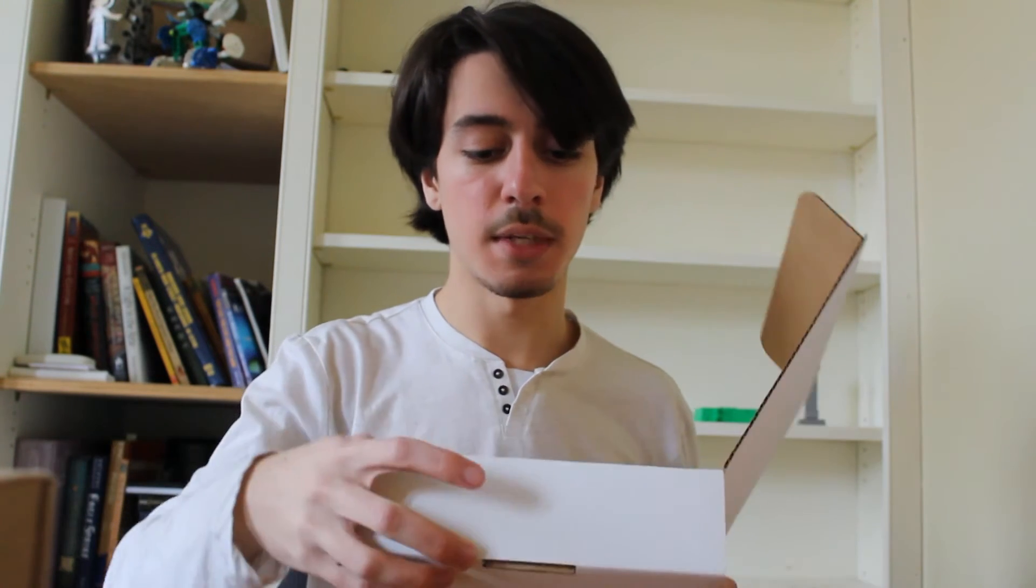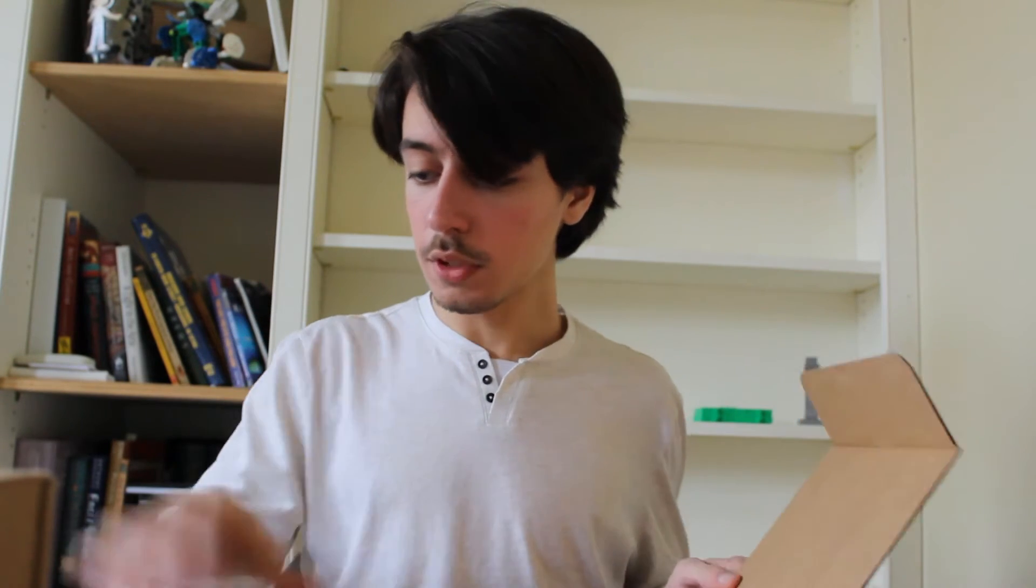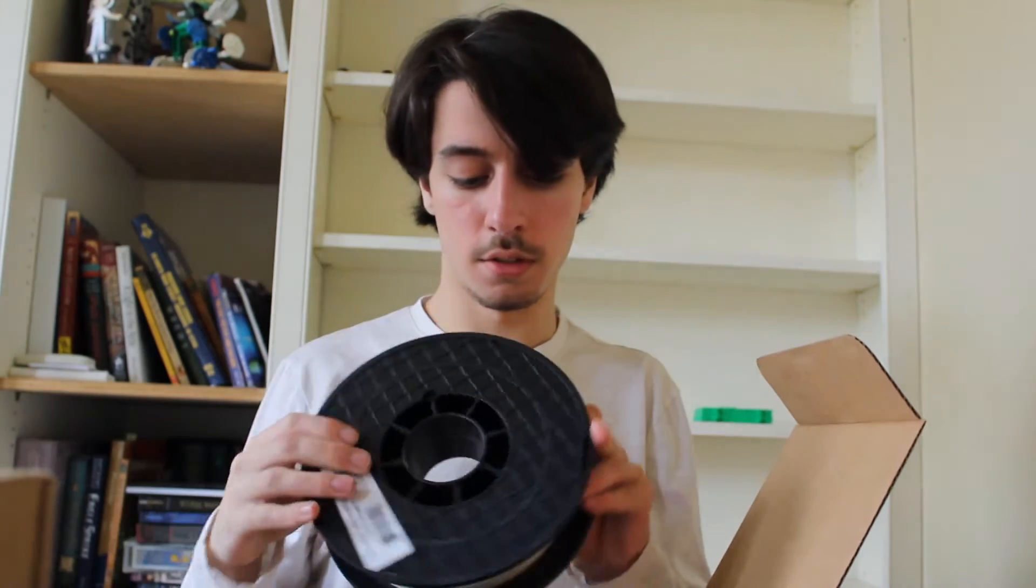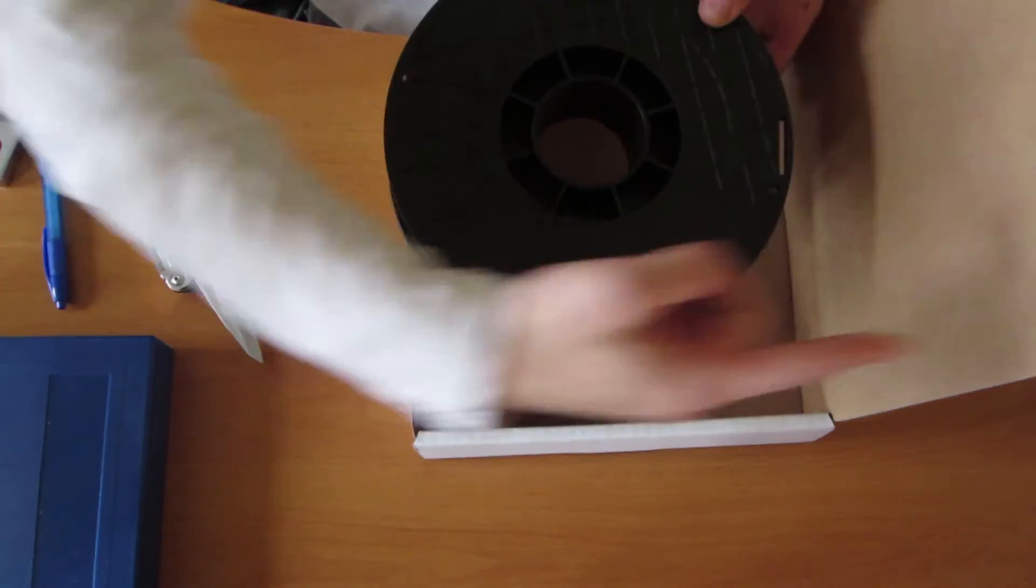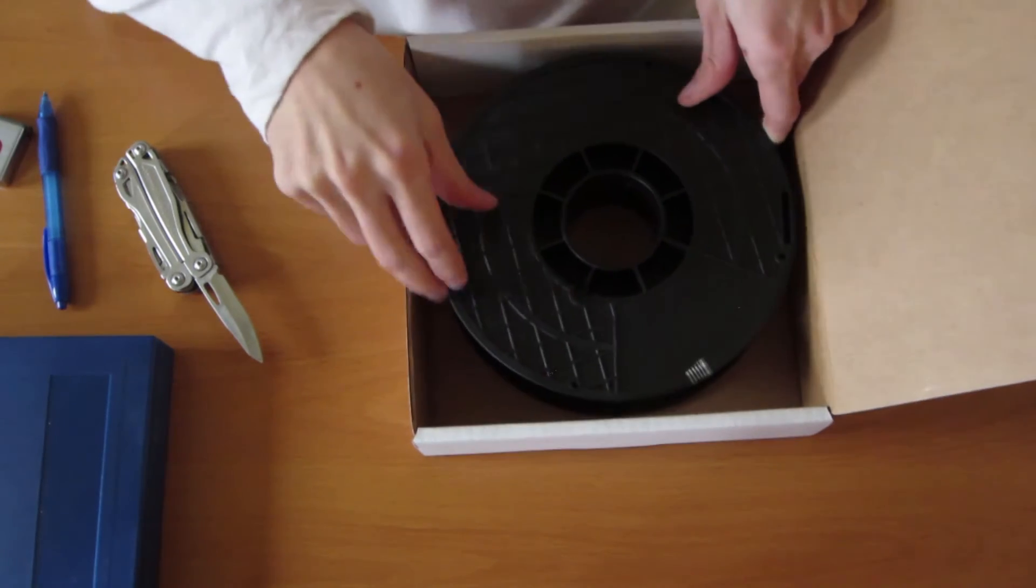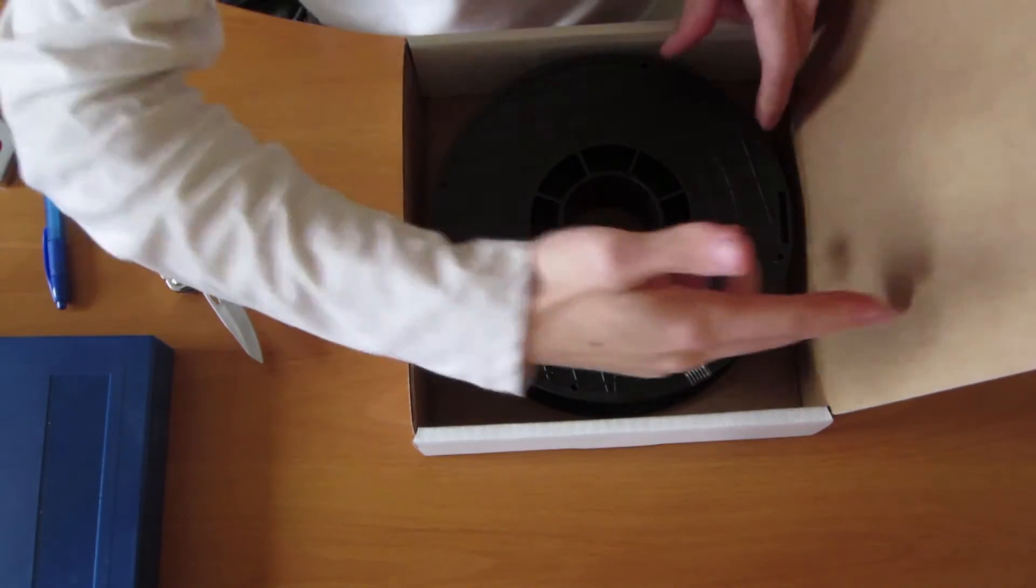So you don't really want it coming out of these thick walls on the side because it's just harder to push through. You want it coming out through the side right here. So if I take my filament and see it's spooling, it's going out in this direction. I want it like this so it comes out there.